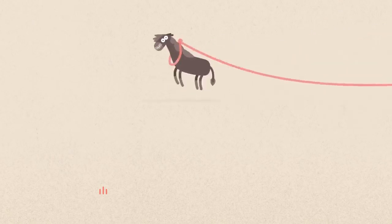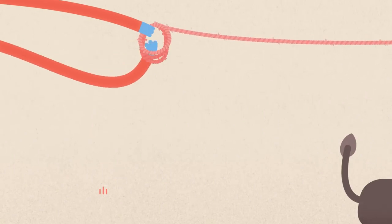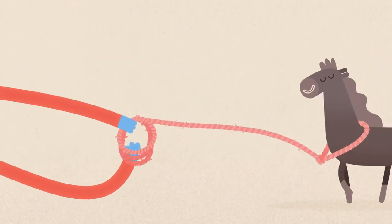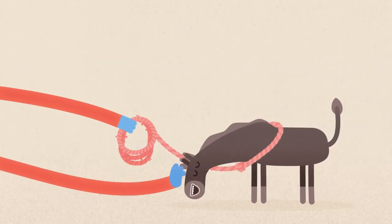The horse runs around, feeling like it's got all the space in the world. But very slowly, the rope's brought in, and the horse adjusts to this feeling, until it comes to a natural place of rest.